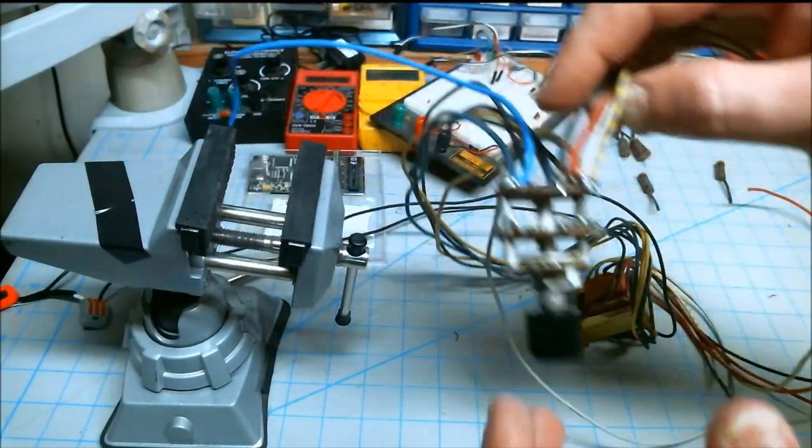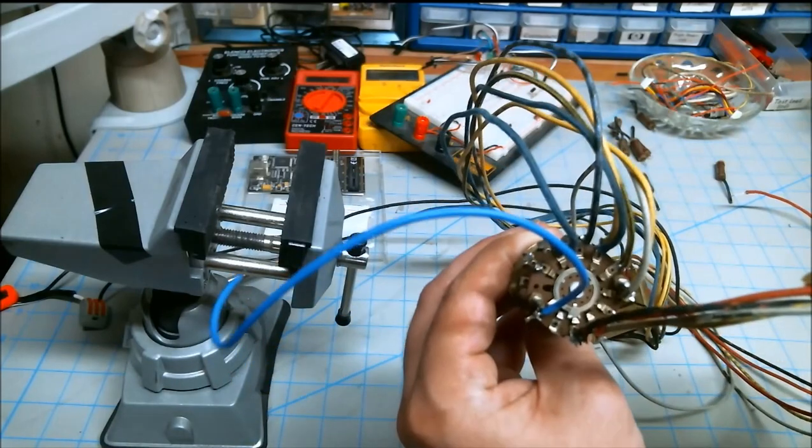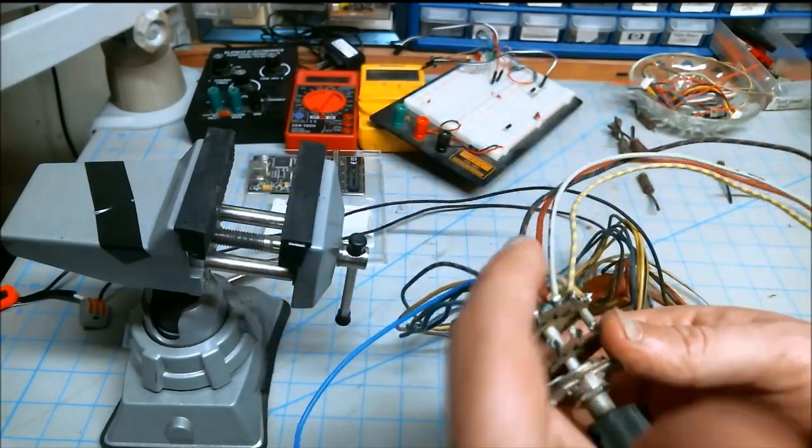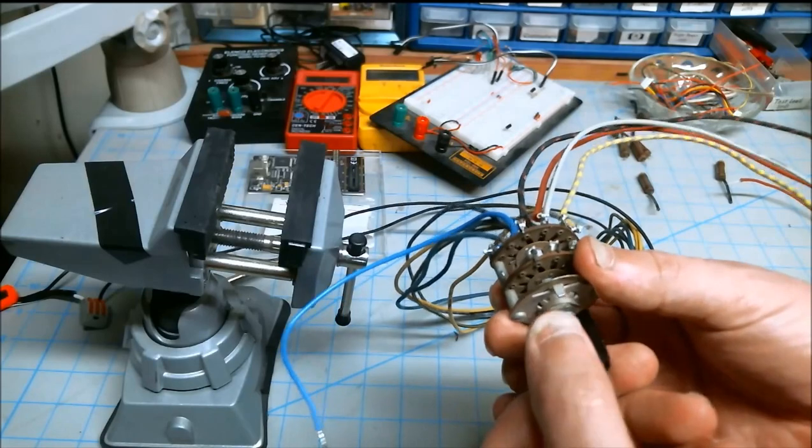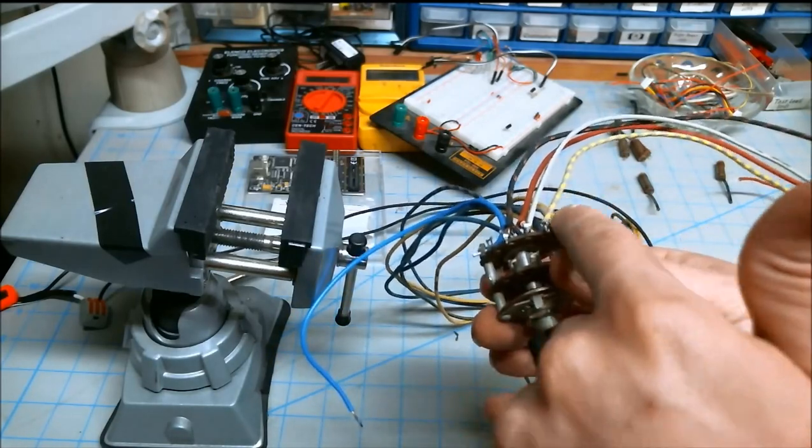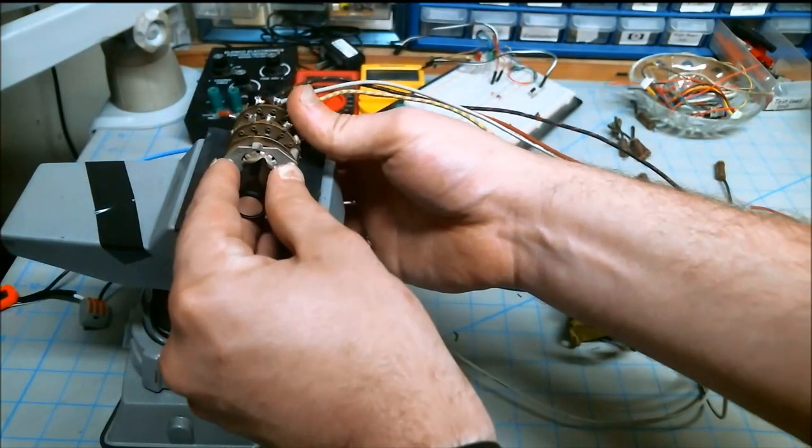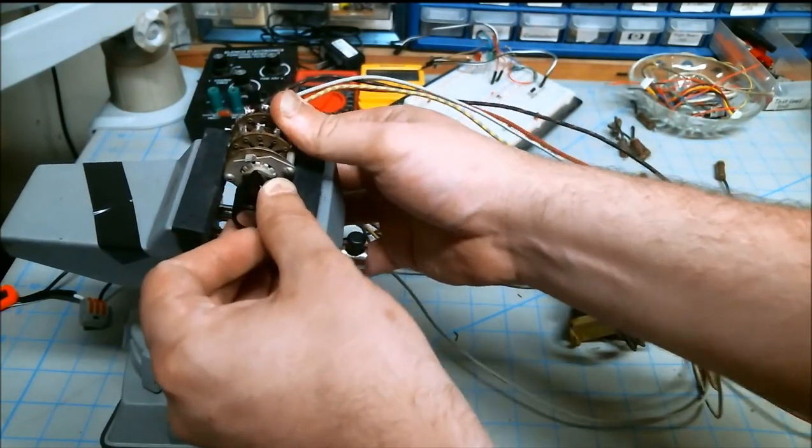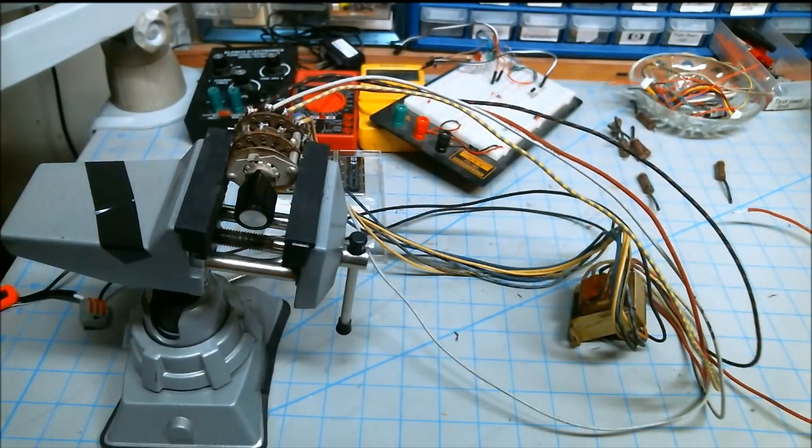So I've utilized all four of the secondaries and their center taps as well. And I've soldered them onto the back of the switch here. So each of these wires corresponds to a switch position. So if I turn it, each click is switching from one wire to the next. And I'll just show you the output on the oscilloscope and on the DMM so you can see what I'm talking about.